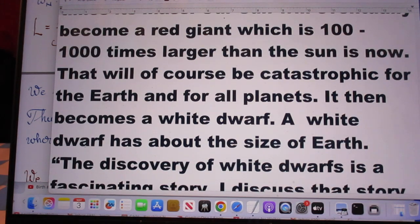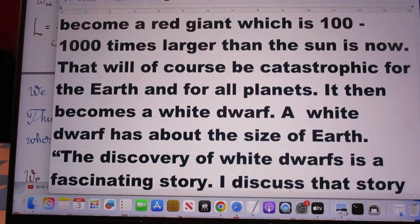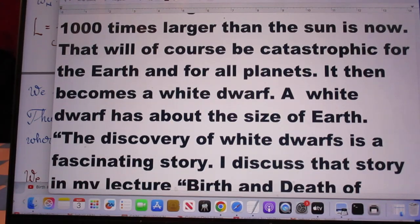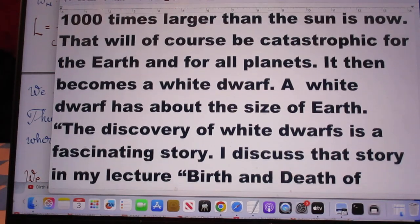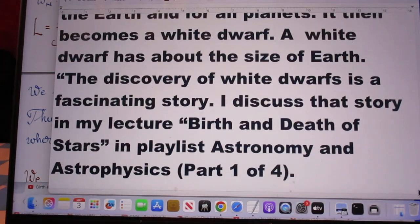That will, of course, be catastrophic for the Earth and for all planets. After the sun has become a red giant, it becomes a white dwarf. A white dwarf has about the size of Earth.